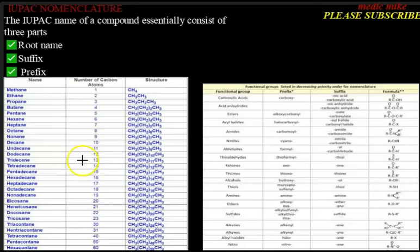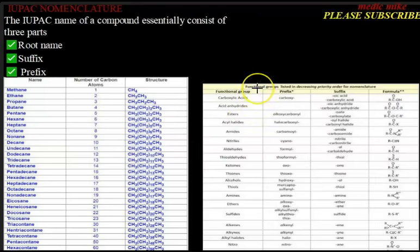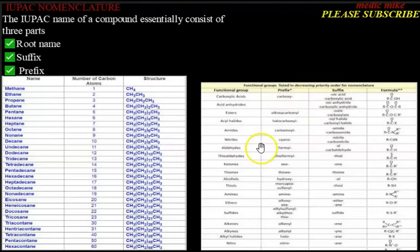For starters, you can learn from carbon 1 to carbon 15 so you can easily use them to name organic compounds. Here you also have the functional groups along with their prefix and suffix. You can pause the video to write these down to help you assimilate and remember them.